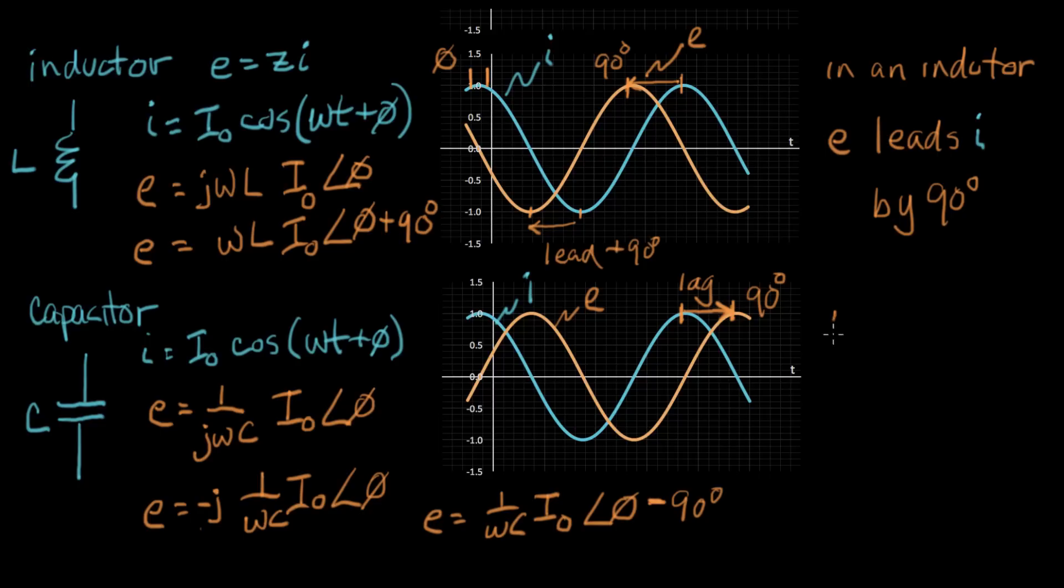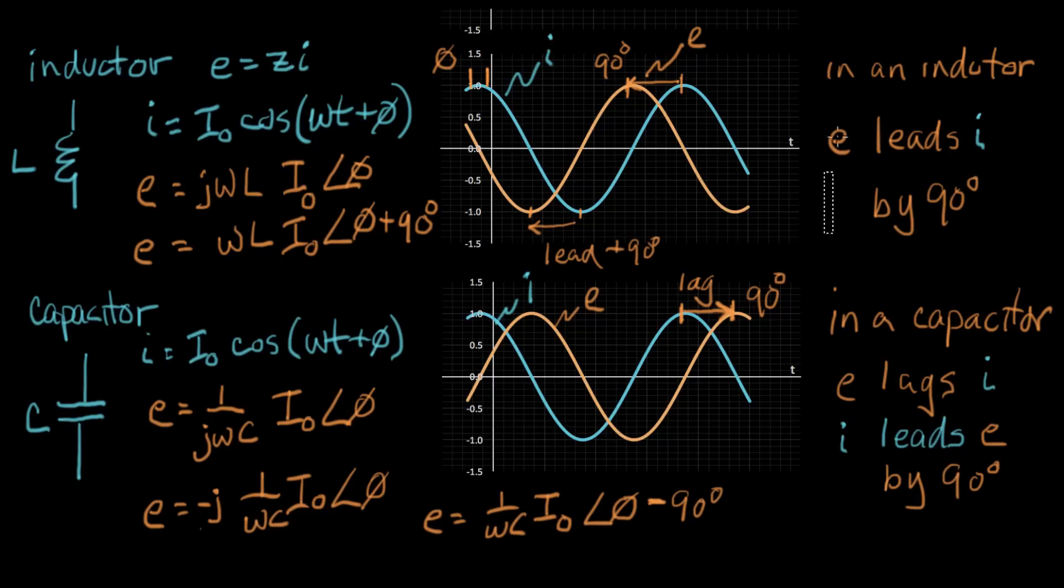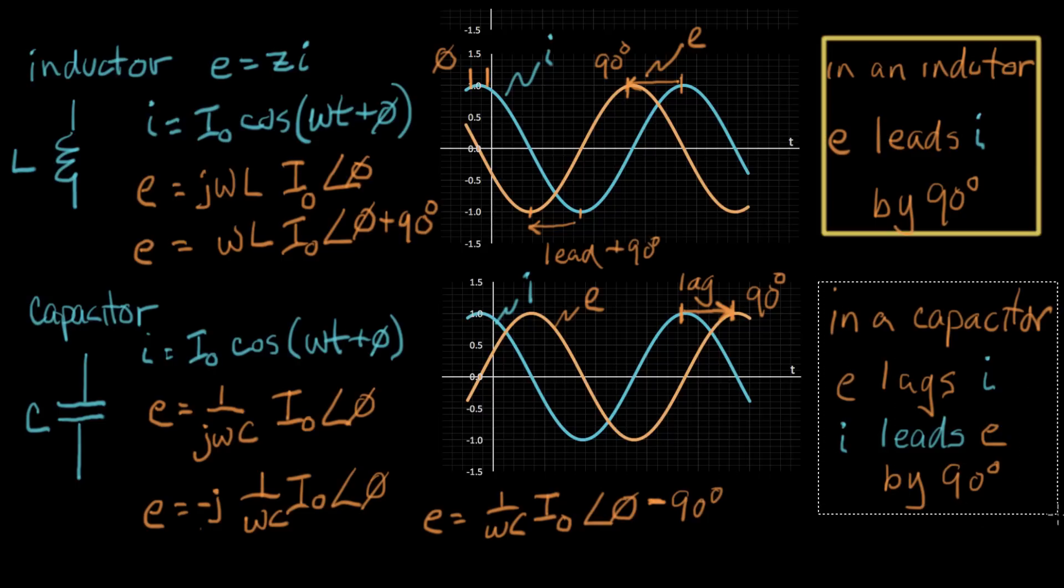We can summarize that. We can say in a capacitor, we say E lags I. And an equivalent way to say this is we can say that I leads E. I leads voltage. So I can actually put boxes around these two results.